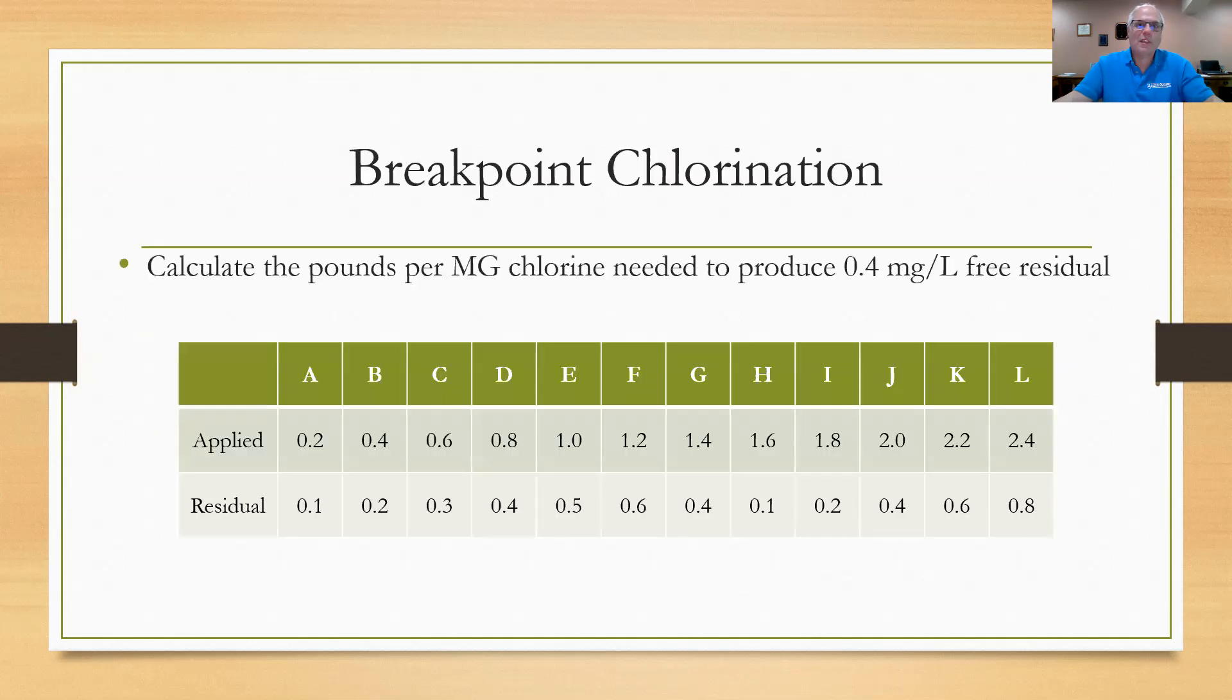Here's one we don't see on the exams too many times anymore, but this is the breakpoint chlorination. They give you a chart here, a table with samples A through L, and they have the applied chlorine dosage and the residual. They tell you to calculate the pounds per million gallons needed to produce 0.4 mg/L free residual. So the answer is on the next page, but if you want to stop the video now you can go ahead and try to work that through.